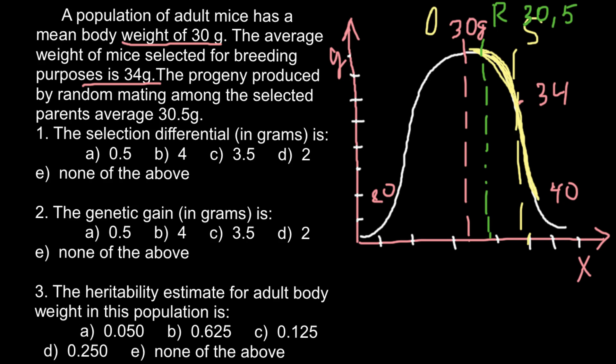The first question: the selection differential in grams is? The selection differential is the difference between the original population mean of 30 grams and the mean of the selected population of 34 grams. So the selection differential is 4 grams. This is answer B.